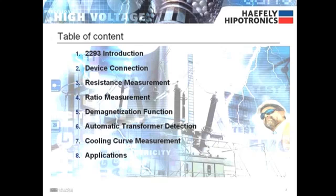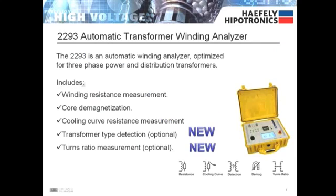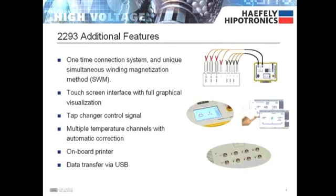The 2293 is an automatic winding analyzer optimized for three-phase power and distribution transformers. It includes winding resistance measurement, core demagnetization, cooling curve resistance measurement, and the newly released optional turns ratio measurement and transformer type detection. Additional features include a one-time connection system, simultaneous winding magnetization method, touchscreen interface, tap changer control signal, multiple temperature channels, onboard printer, and data transfer via USB.